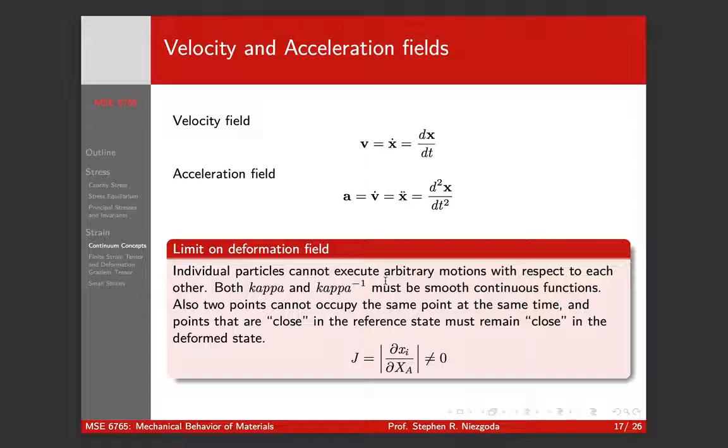So if you think about this notion that in a linear mapping, a sphere can at most transform to an ellipsoid, what that implies is that points that are close in the reference state must still remain close in the deformed state. They can get farther apart, or closer together. But they can't magically jump - points that were right next to each other in the body can't magically jump to opposite sides of the body.